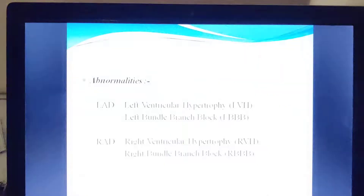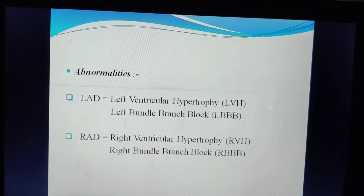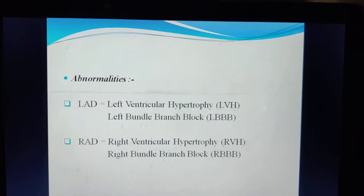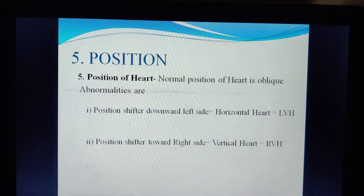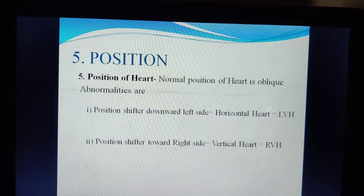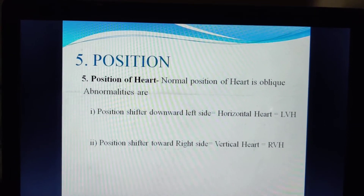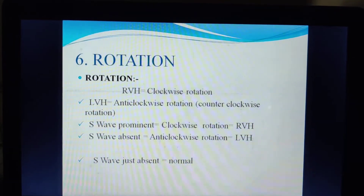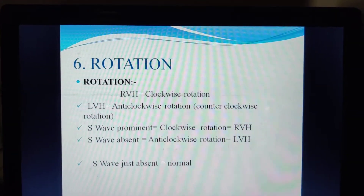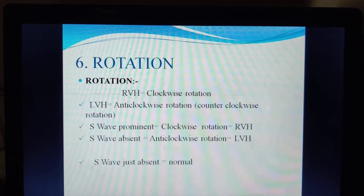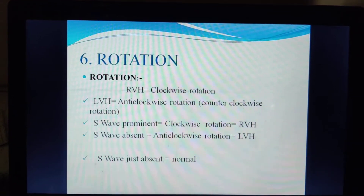Abnormalities found with left axis deviation include left ventricle hypertrophy and left bundle branch block. Right axis deviation is associated with right ventricle hypertrophy. Regarding position of the heart: normal position is oblique; in left ventricle hypertrophy the position shifts toward the left (horizontal heart); in right ventricle hypertrophy it shifts toward the right. For rotation: right ventricle hypertrophy gives clockwise rotation; left ventricle hypertrophy gives anticlockwise rotation. S wave: if S wave is prominent, it indicates clockwise rotation and right ventricle hypertrophy. If S wave is absent, it indicates anticlockwise rotation and left ventricle hypertrophy. If S wave is just absent, it is normal.